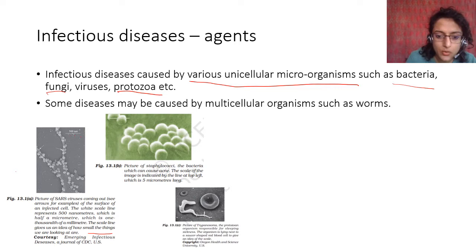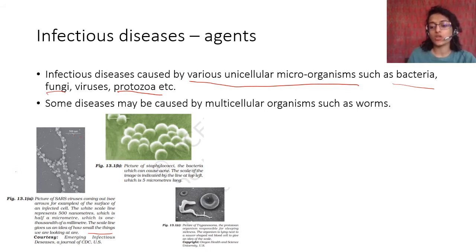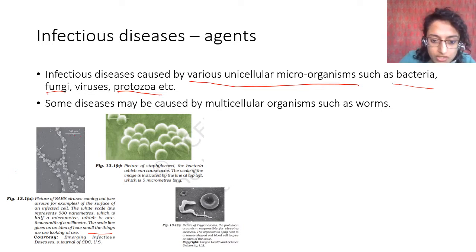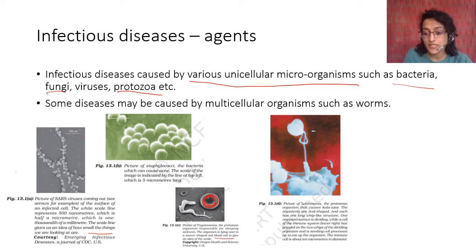This is Trypanosoma, a protozoan that causes sleeping sickness. There are two types — Trypanosoma brucei (African sleeping sickness) and Trypanosoma cruzi (American sleeping sickness) — with similar symptoms but caused by different protozoa. The organism is shown lying next to a saucer-shaped red blood cell, showing just how small the protozoan is. It is unicellular, so it is as small as a small cell.